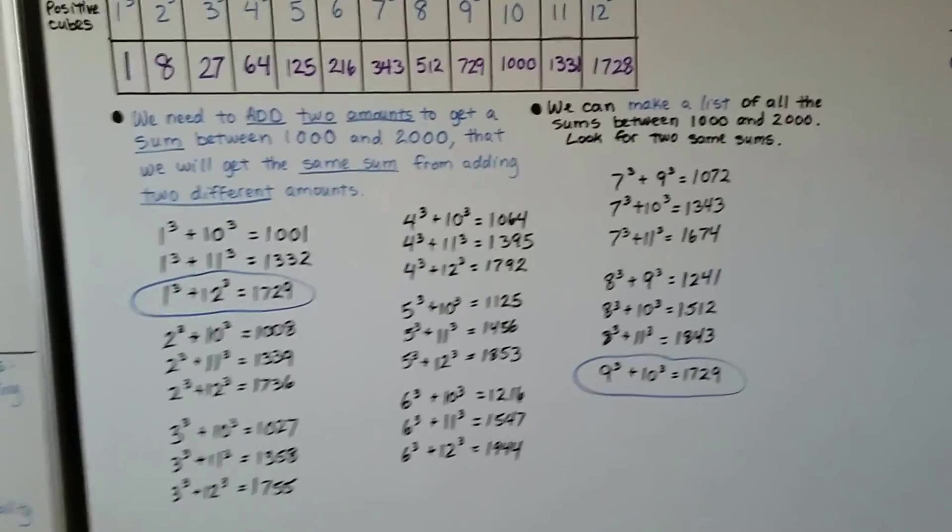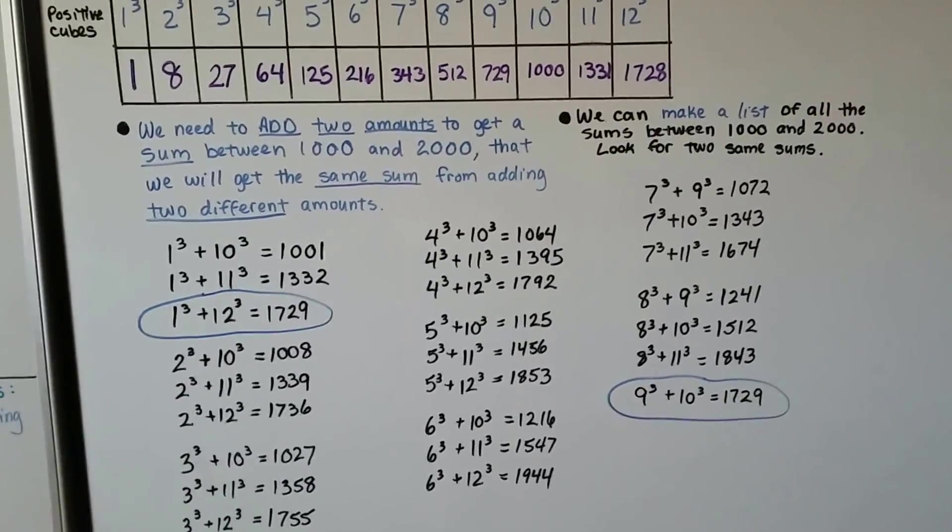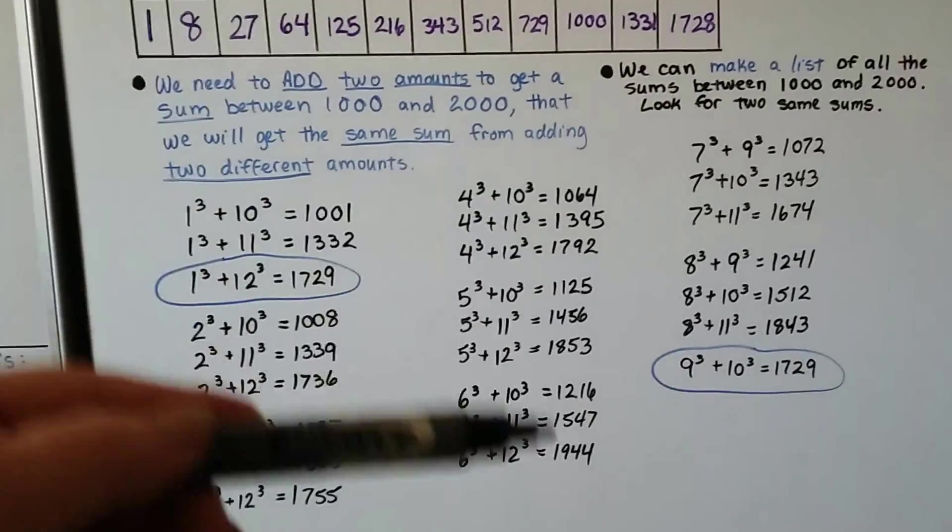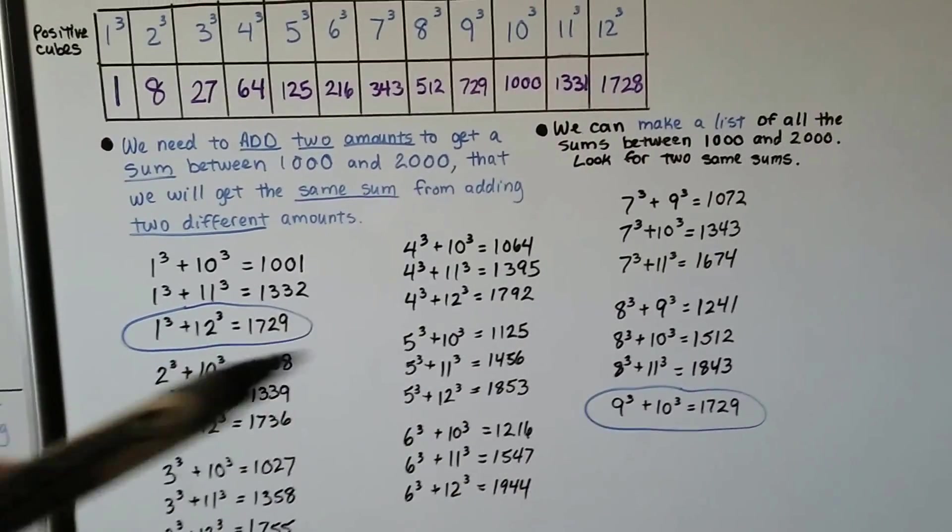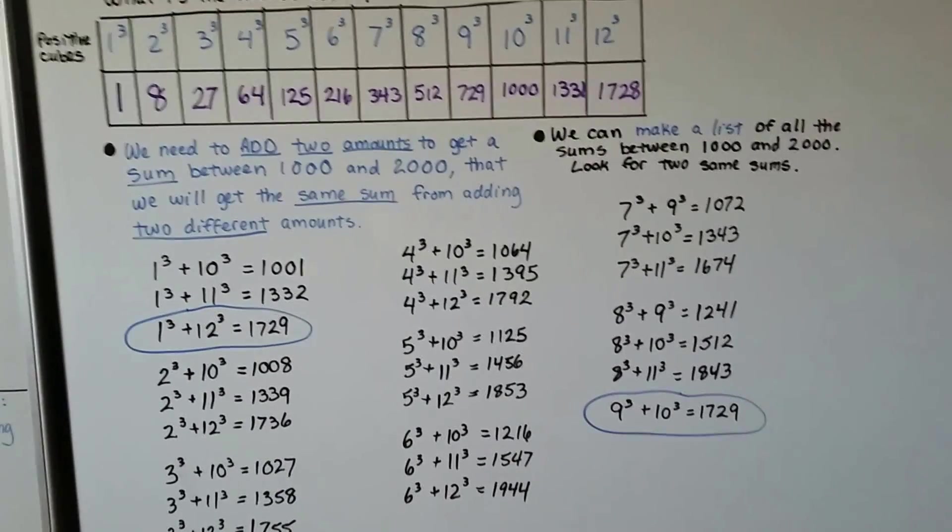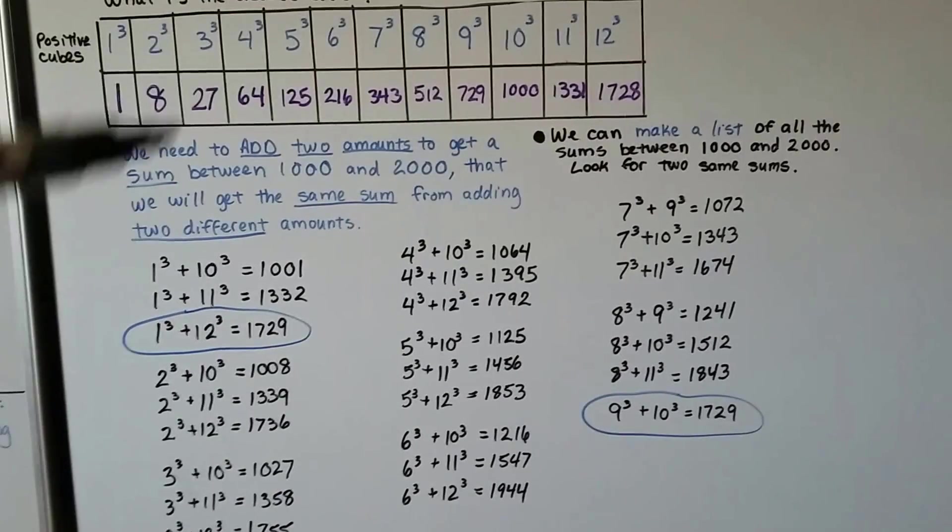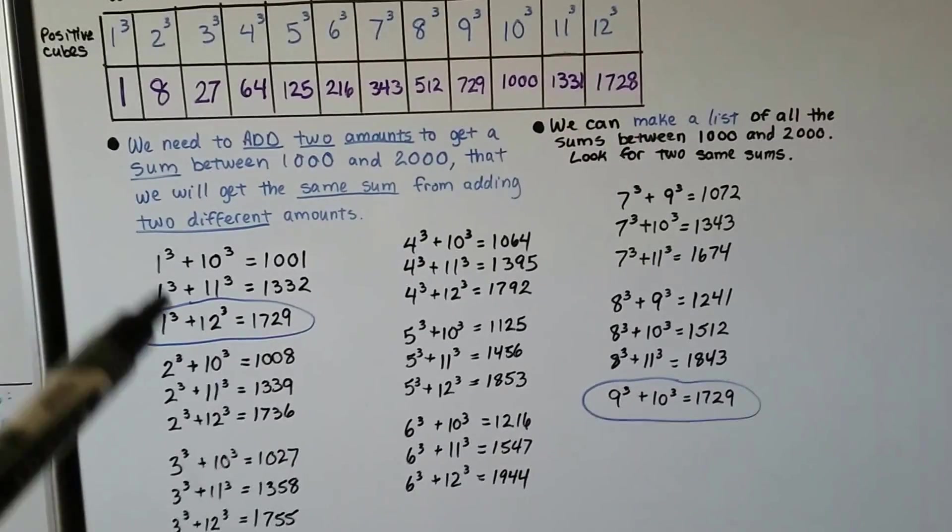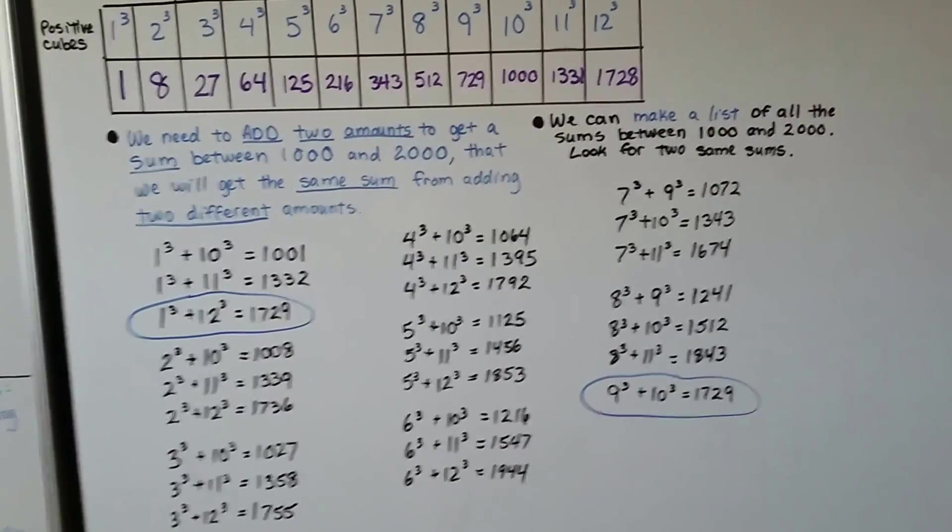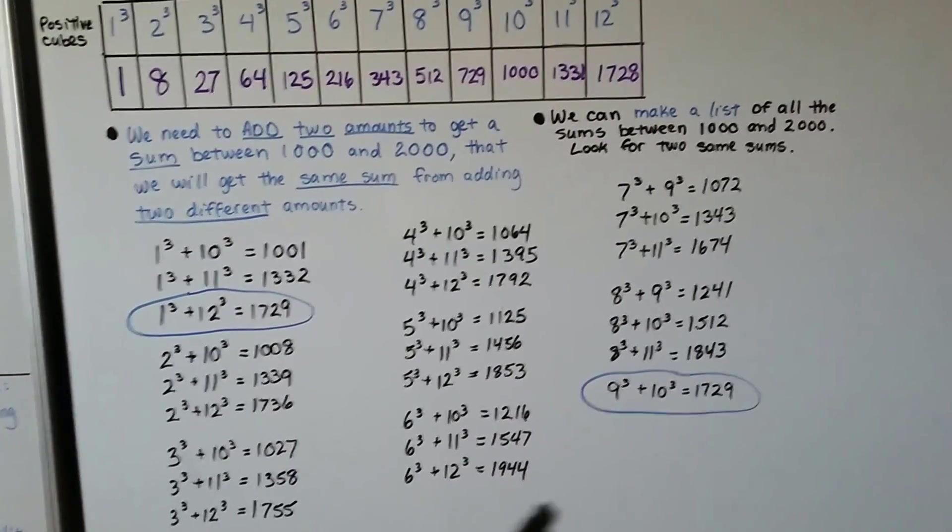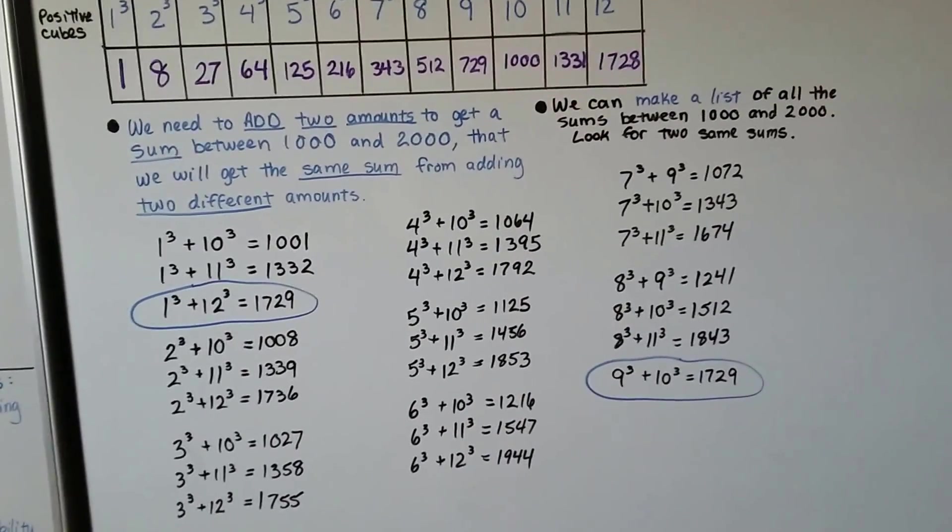See? So by making an organized list, I was able to find the two different ways to come up with the sum between 1,000 and 2,000 by adding two of these together. So we've got 1 cubed plus 12 cubed. We've got 9 cubed plus 10 cubed.